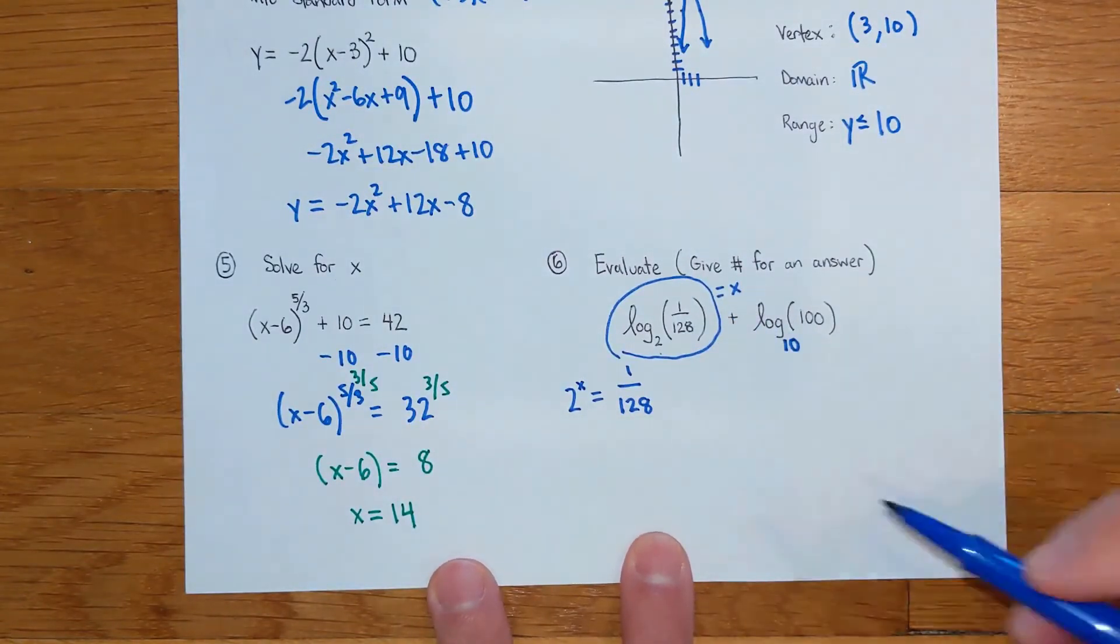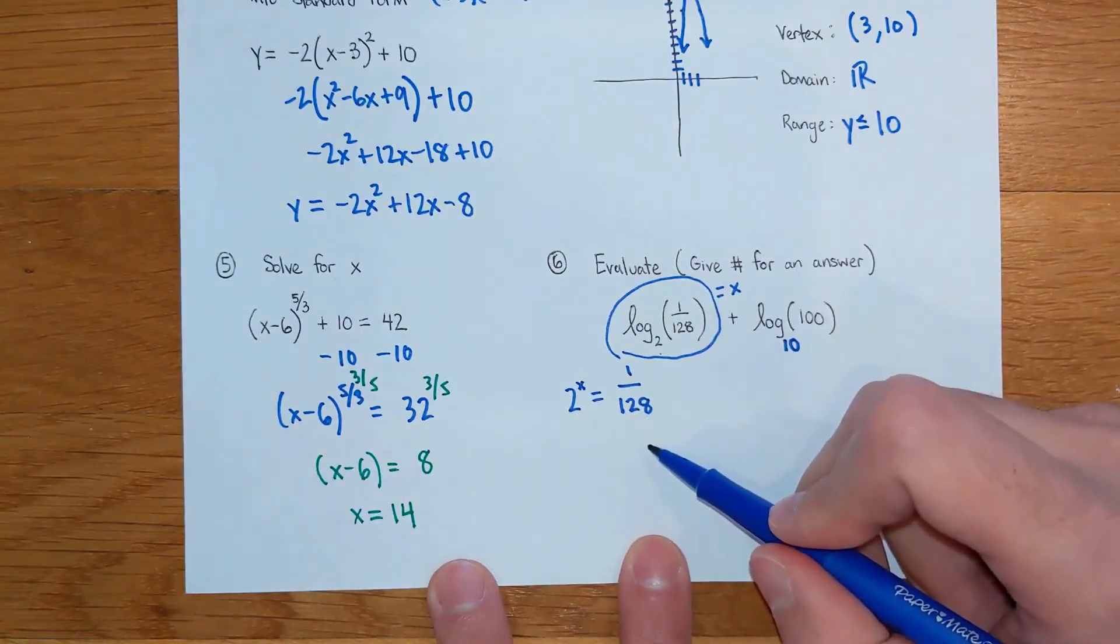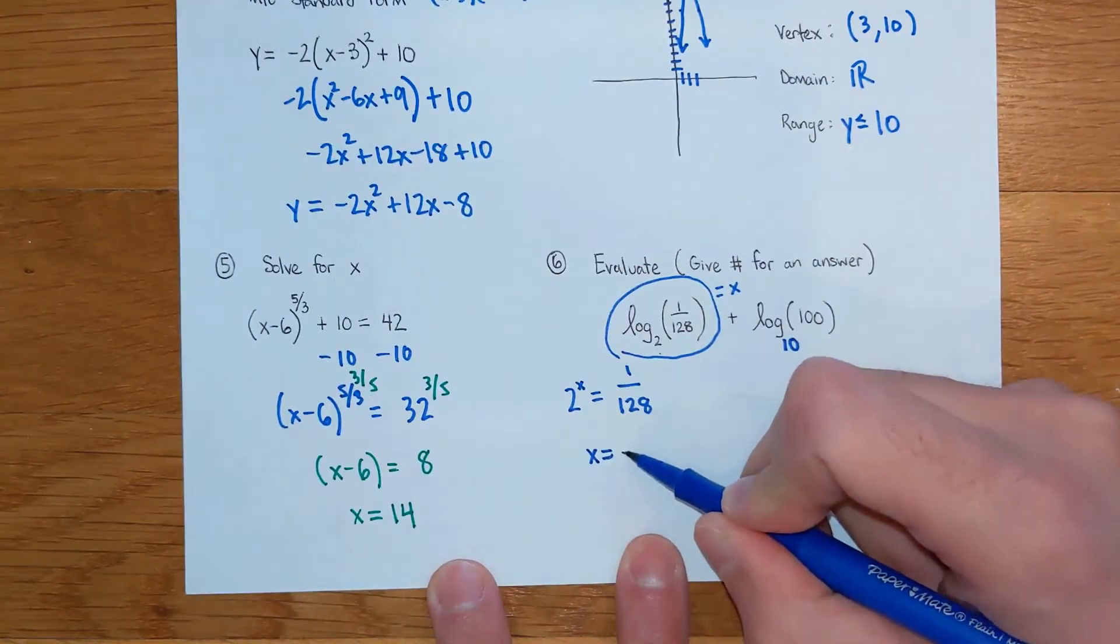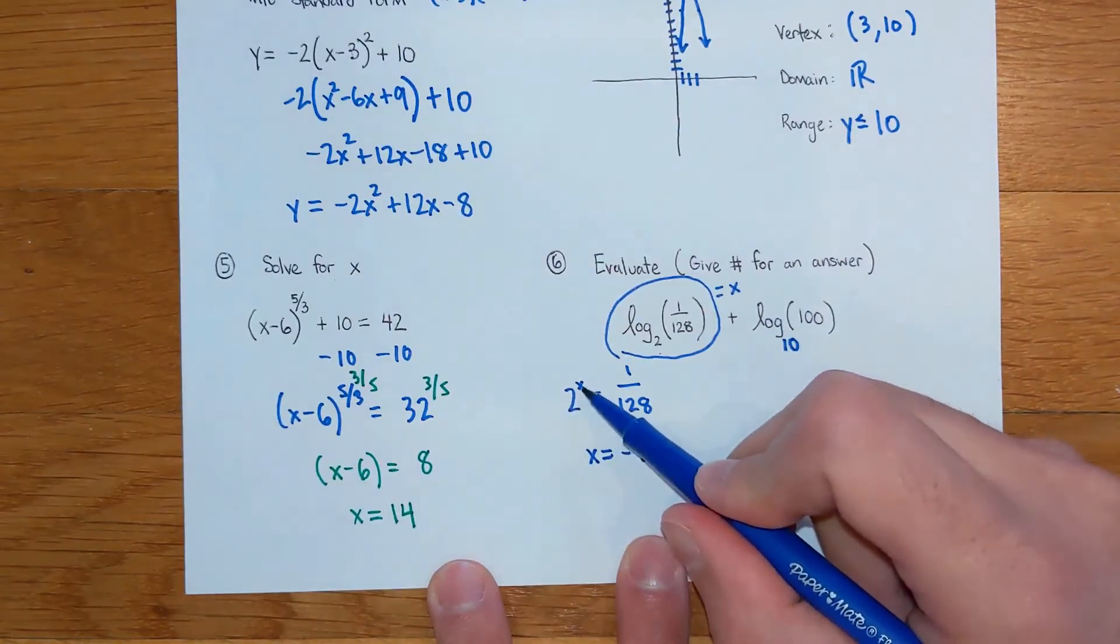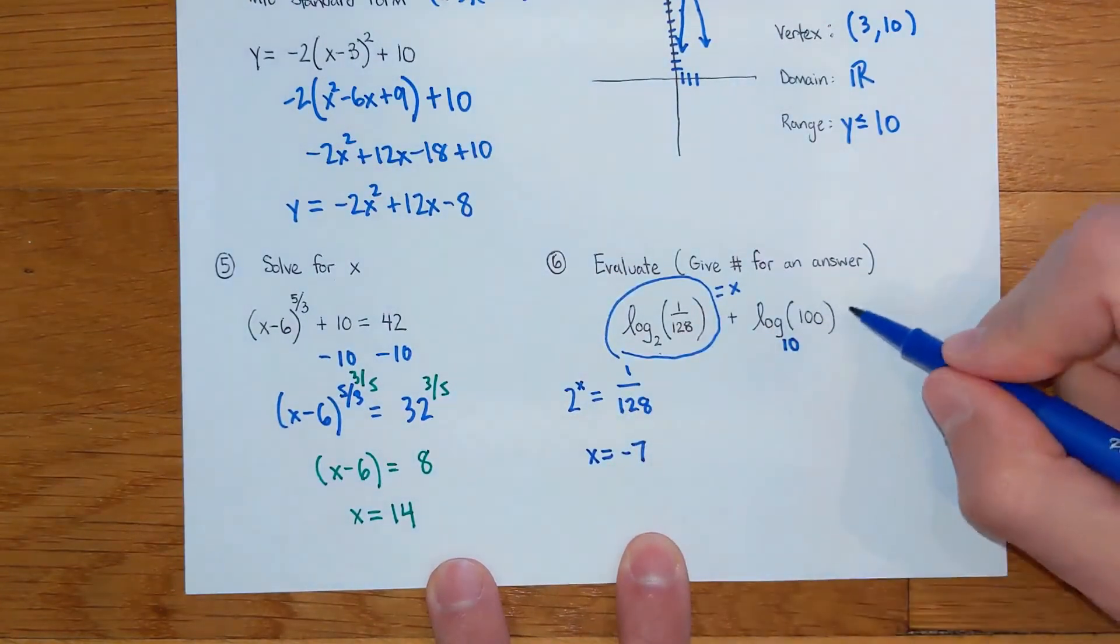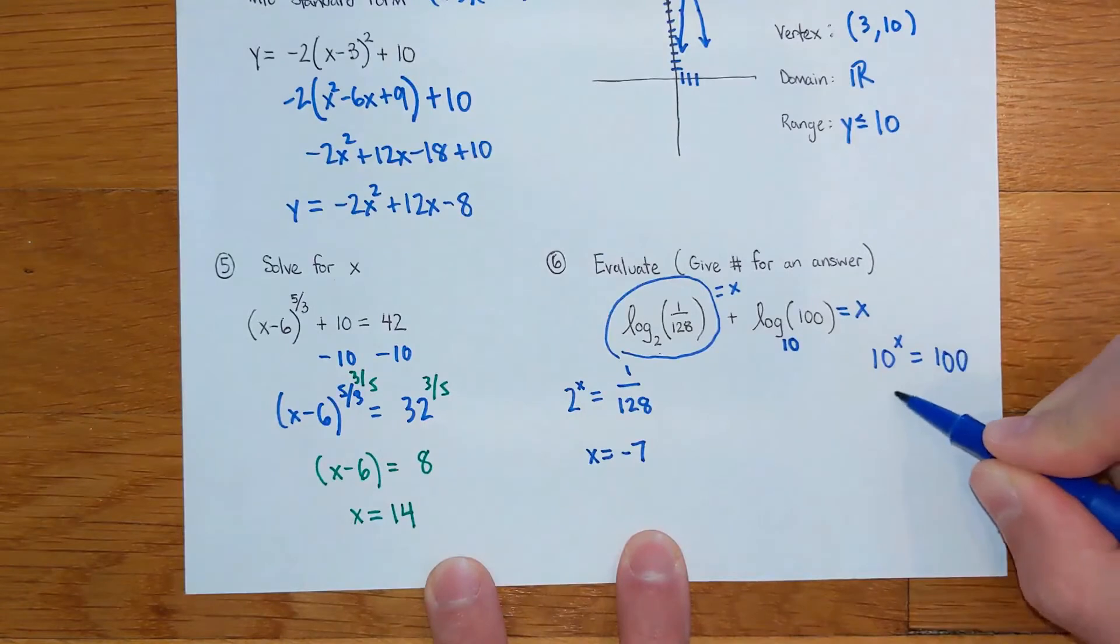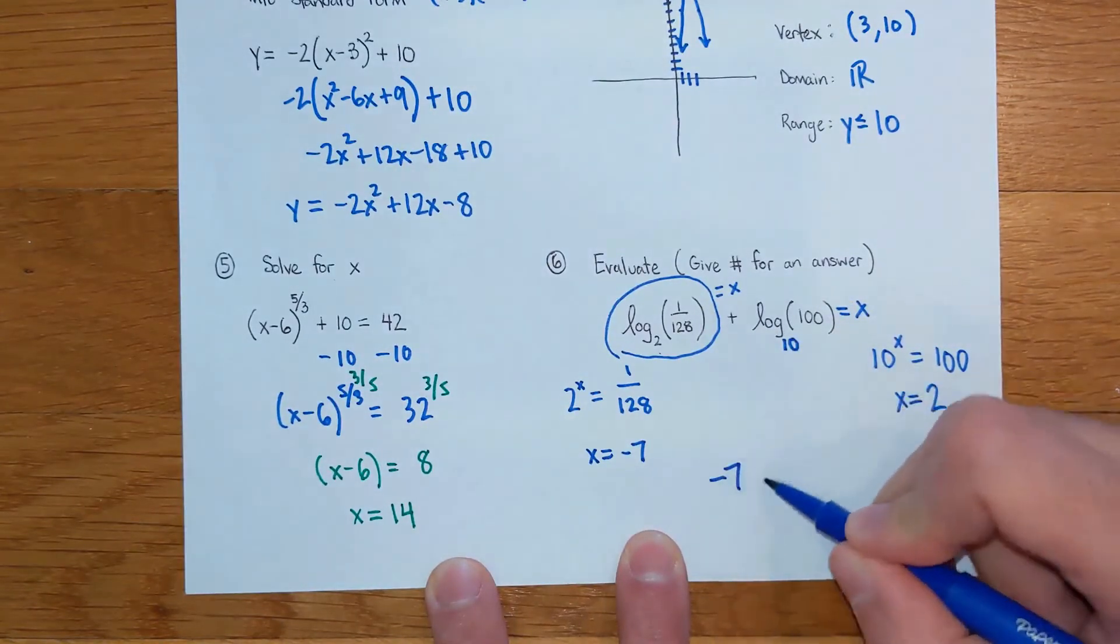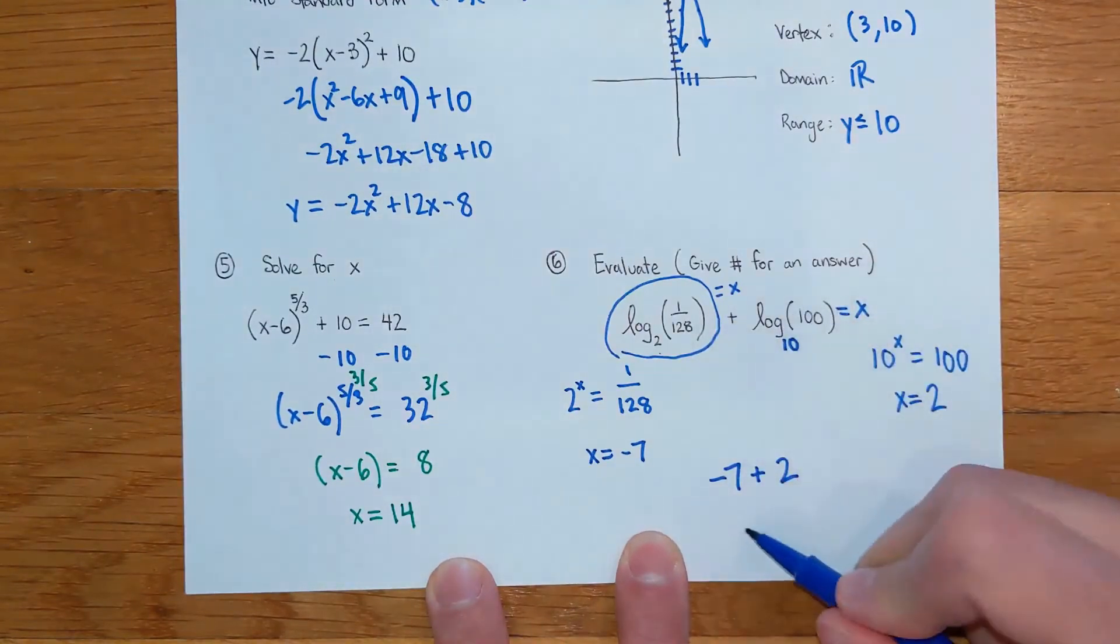So I did the thing that we had talked about before. When you're trying to get a fraction like this, I know it's got to be a negative exponent. Two to the seventh power is 128, so the exponent that makes this work is a negative seven. So I have negative seven. Two to the negative seven gets you one over 128. The second guy right here is going to say 10 to the x equals 100, and that one is pretty straightforward. You should just get x equals two. So problem said to evaluate negative seven plus, and I got two for this guy. Final answer on number six is a negative five.